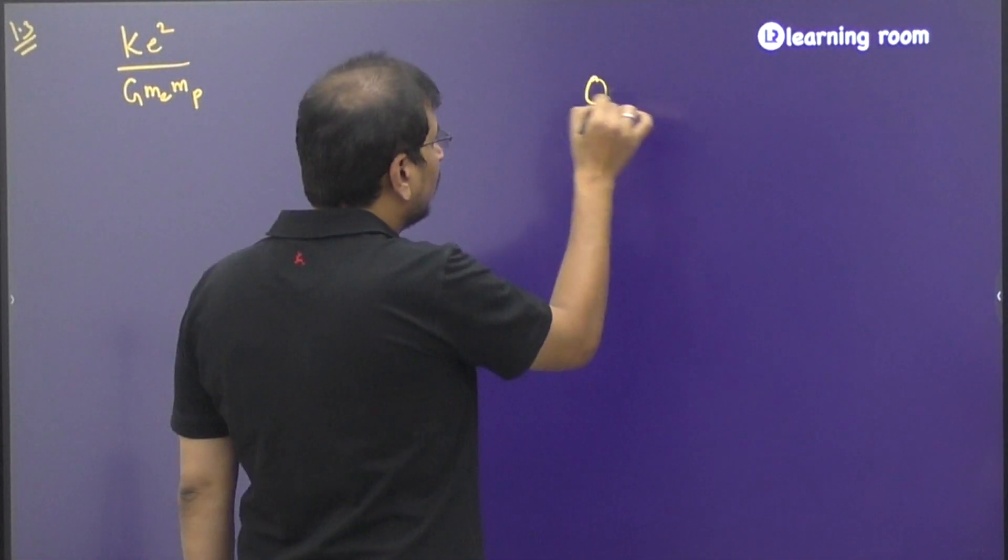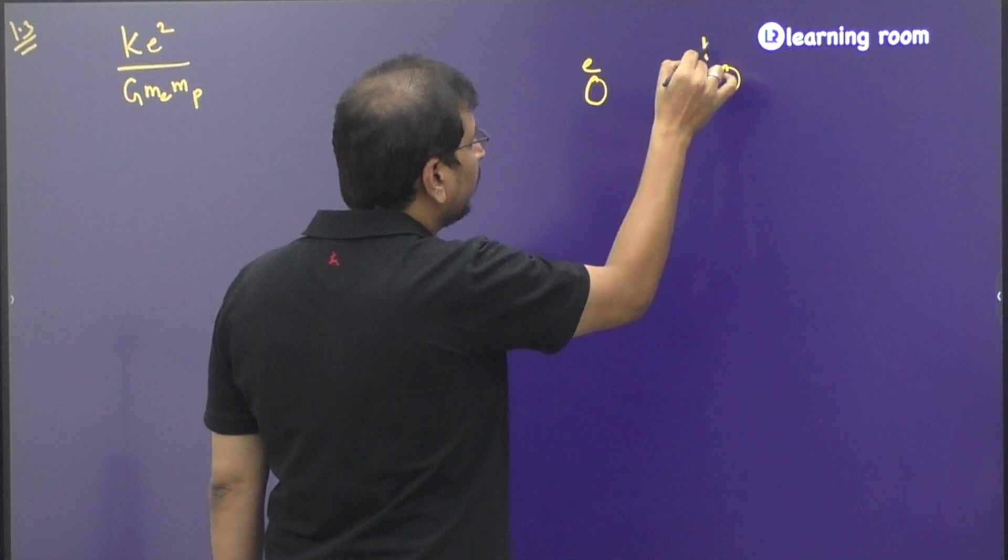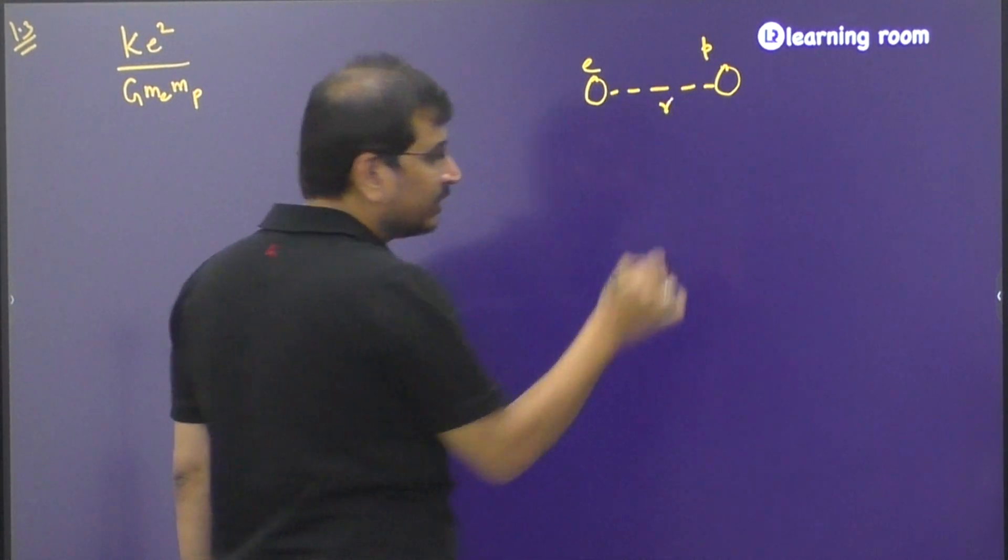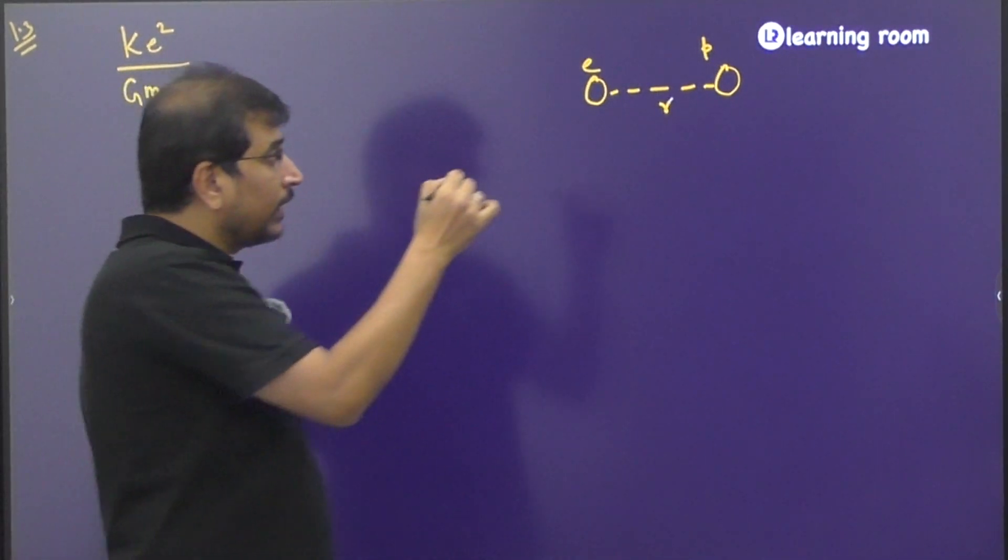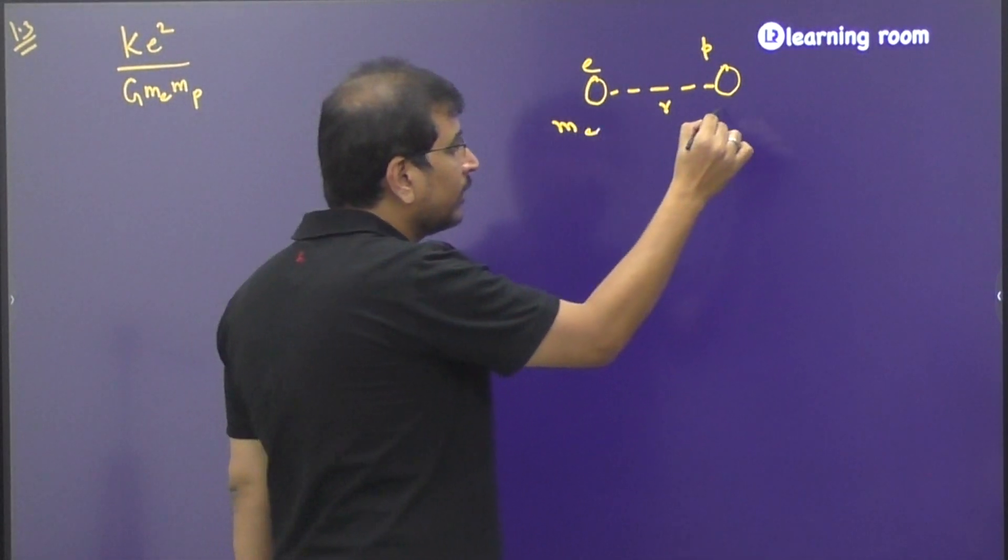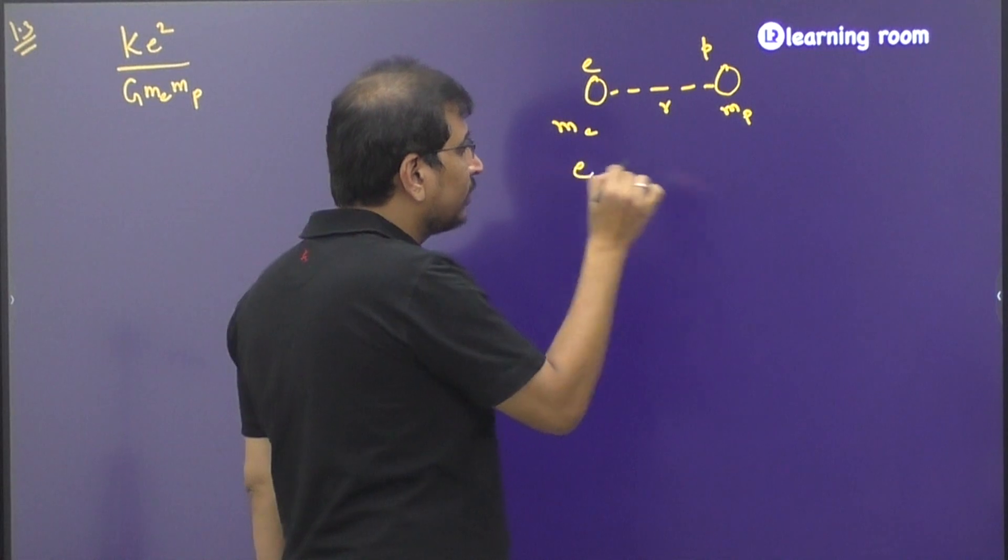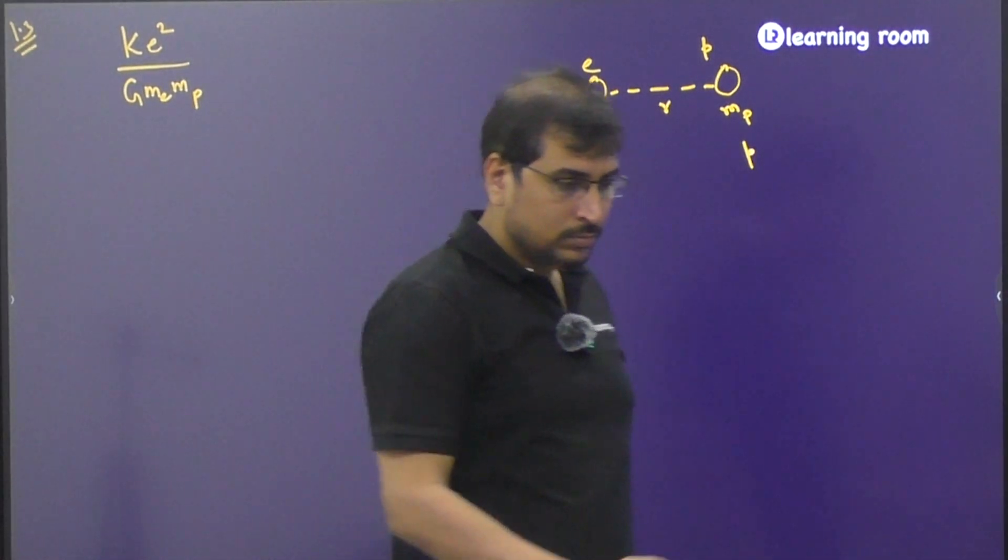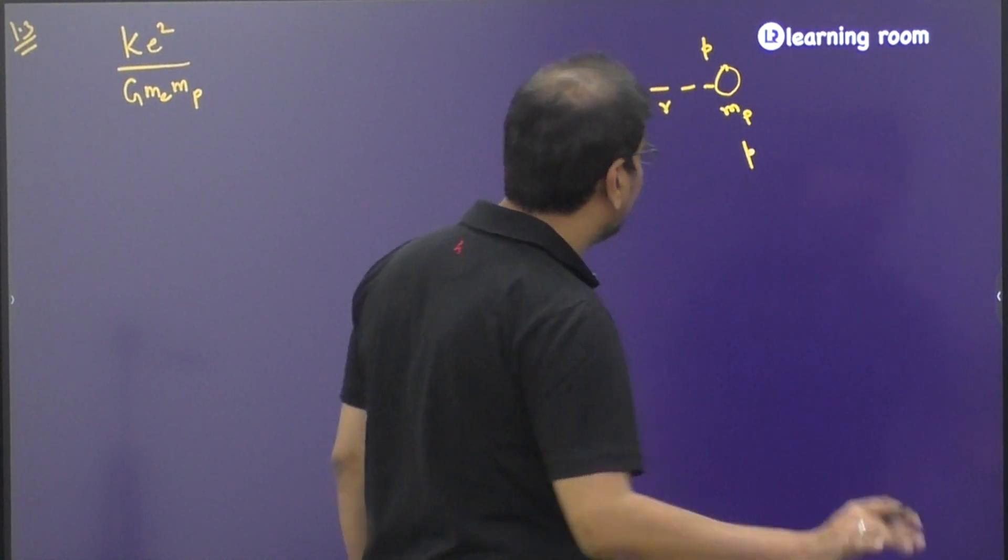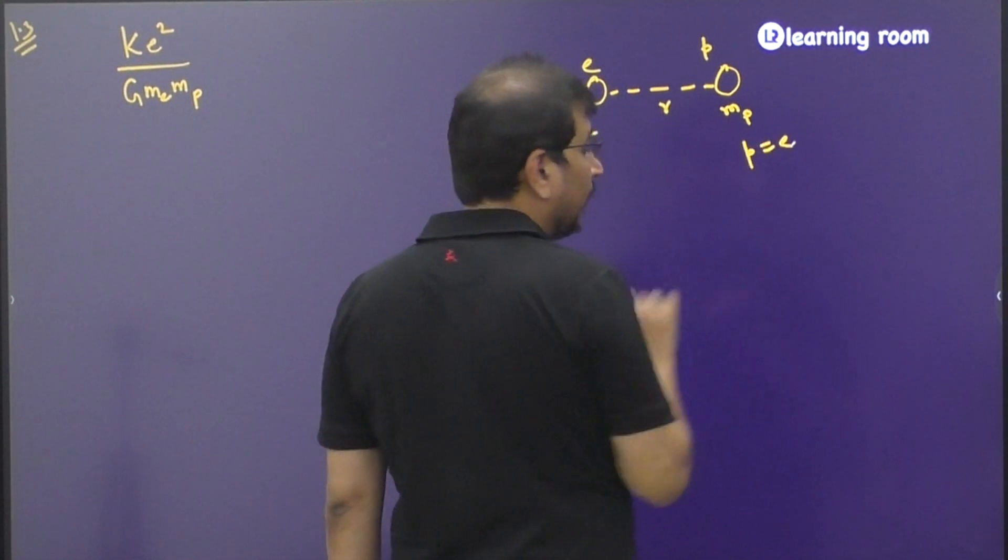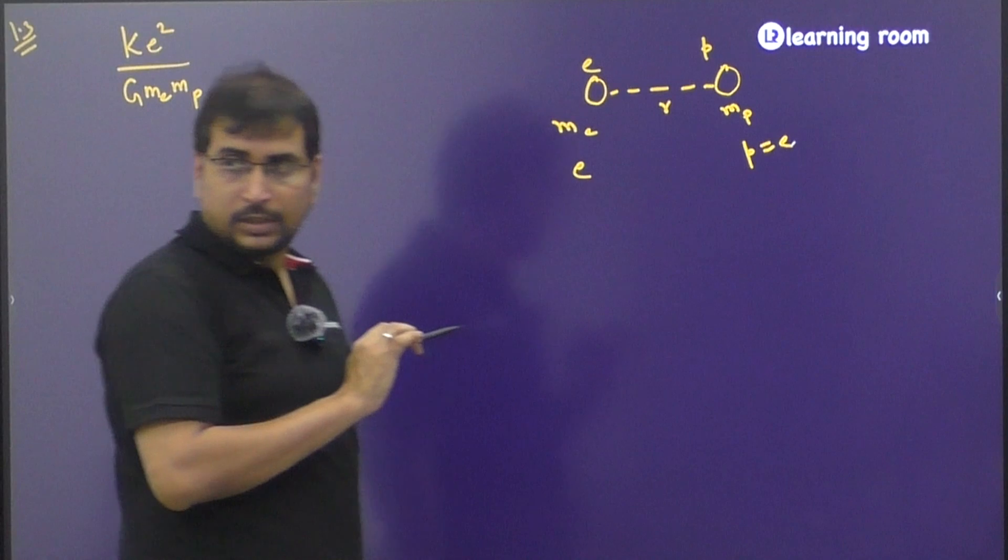let us say there is an electron and proton which is separated by distance r. We should not forget the fact that electrons have mass as well as charge. Both have the same charge of e, electron and proton have the same charge e.